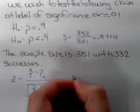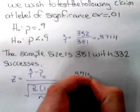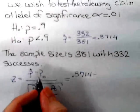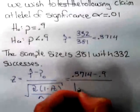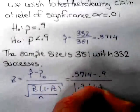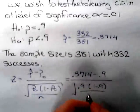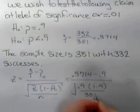So we have p hat 0.8714 minus p naught which is 0.9, divided by the square root of 0.9 times 1 minus 0.9 over the sample size which is 381.